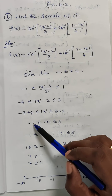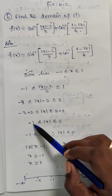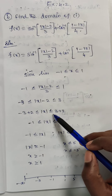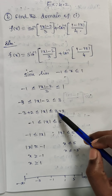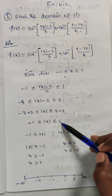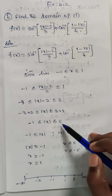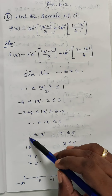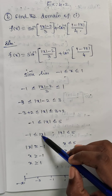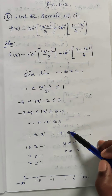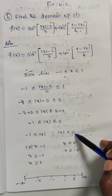So minus 3 plus 2 is equal to minus 1, so minus 1 is less than or equal to mod of x, and 3 plus 2 is equal to 5. So we have minus 1 less than or equal to mod of x less than or equal to 5. We now split this into: mod of x greater than or equal to minus 1, and mod of x less than or equal to 5.